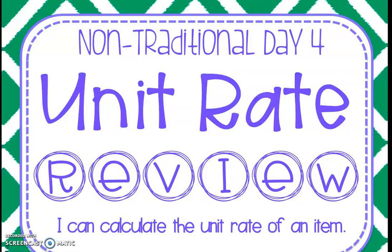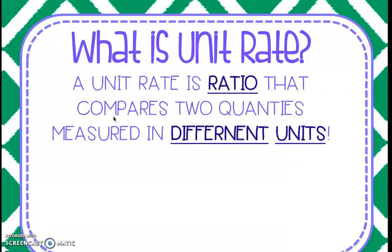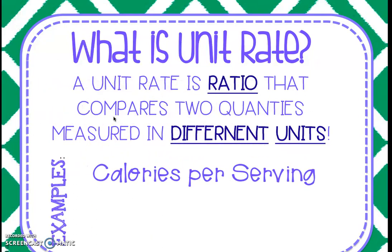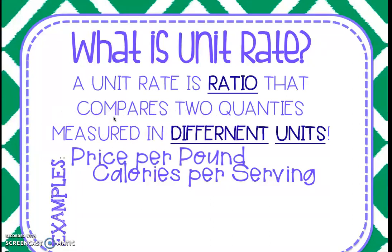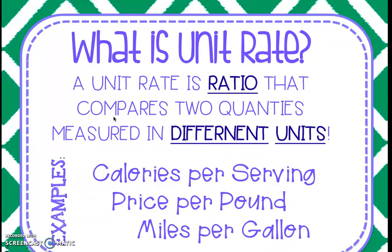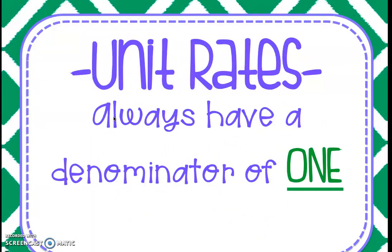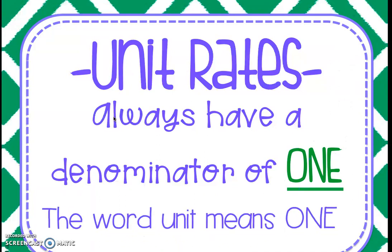So, quick review. What is unit rate? A unit rate is just a ratio that compares two quantities that are measured in different units. So, anytime we're talking about unit rate, our denominator is always one. The word unit actually means one, so when we're looking for a unit rate, we're looking for one of something.